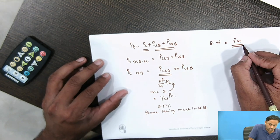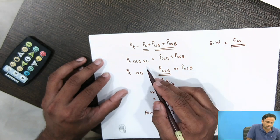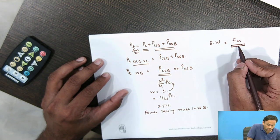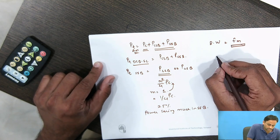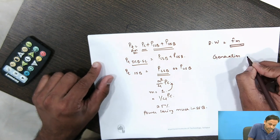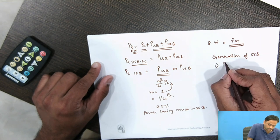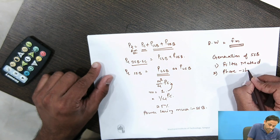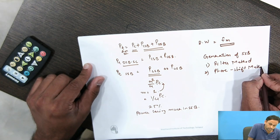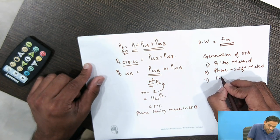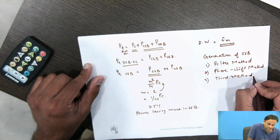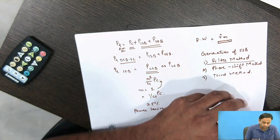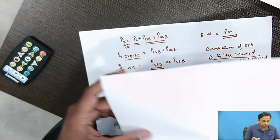We've saved half the bandwidth compared to DSB-SC and AM. There are three methods to generate SSB: the filter method, the phase shift method, and a third method. In this lecture we focus on the filter method. For that we need to examine the block diagram for the filter method.